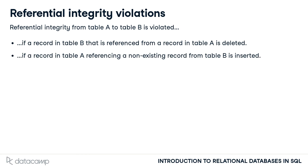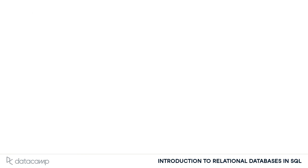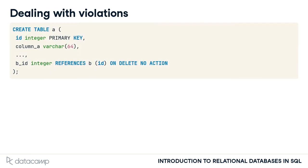That's the main reason for foreign keys — they will throw errors and stop you from accidentally doing these things. However, throwing an error is not the only option. If you specify a foreign key on a column, you can actually tell the database system what should happen if an entry in the referenced table is deleted. By default, the ON DELETE NO ACTION keyword is automatically appended to a foreign key definition, like in the example here.